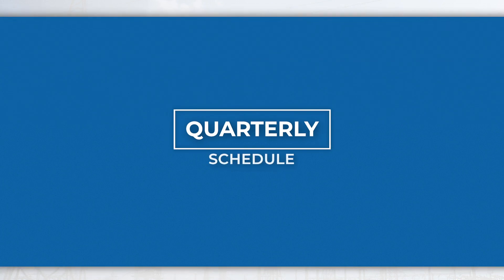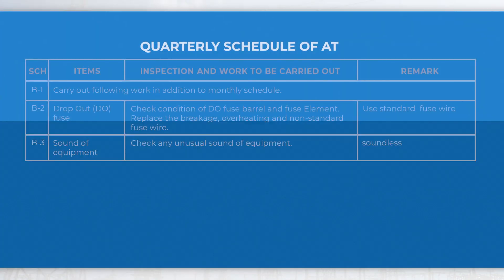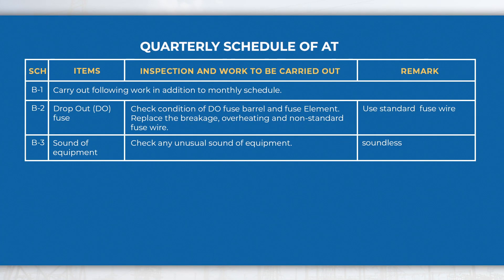In the quarterly schedule, perform activities like checking the condition of DO fuse and sound of equipment, etc., in addition to monthly schedule activities.